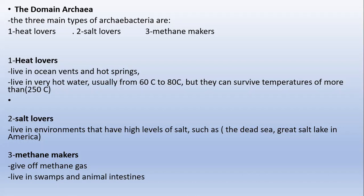Heat lovers live in ocean vents and hot springs. Salt lovers live in environments that have high levels of salt — for example, the Dead Sea and the Great Salt Lake in America. Methane makers give off methane gas and live in swamps and animal intestines. So there are three main types of archaea: heat lovers, salt lovers, and methane makers.